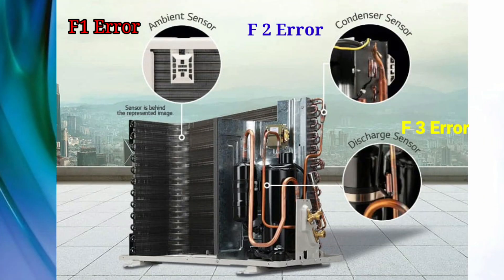This is the complete picture of the outdoor unit. One is the ambient sensor — that's the F1 error. Another is the condenser sensor — that's the F2 error. And the third is the discharge sensor — that's the F3 error. So if fault F1 appears, check your ambient sensor; for F2, check your condenser sensor; and for F3, check your discharge sensor. Thanks for watching — please like and subscribe to my channel!